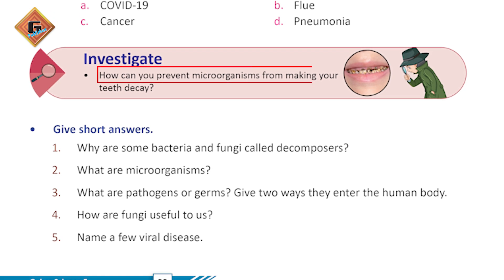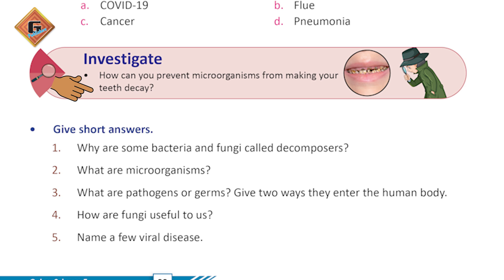Now investigate: how can you prevent microorganisms from making your teeth decay? How can you prevent bacteria or microorganisms from making your teeth decay? We can prevent tooth decay by brushing teeth twice a day. We should not eat things that damage our teeth, like candies and chocolates. Brush two times a day so that there is no accumulation in your teeth and no infection.